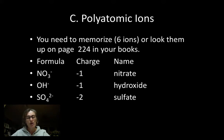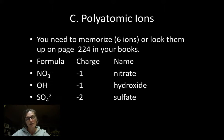When we look at a polyatomic ion, it has both a formula and a charge. For example, NO₃ is the formula and minus one is the charge — this would be the nitrate ion. The hydroxide ion has formula OH and a minus one charge. Sulfate, SO₄, has a two minus charge.